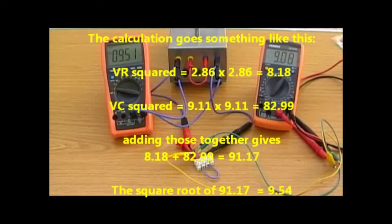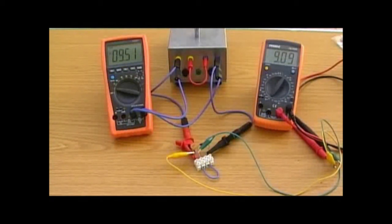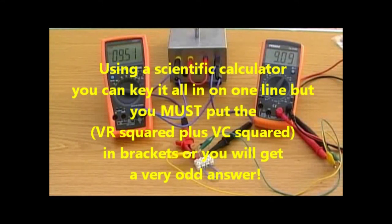And if we apply that, what do we get now, Dan? Okay, so that works out to be 9.54 volts. Okay, which is not a million miles away from what we've got. So within the margin of error that we've got in a small experiment like this, it shows that the maths and the real-life circuits really do work together.